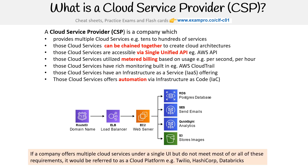If a company offers multiple cloud services under a single UI but does not meet most or all of these requirements, it would just be referred to as a cloud platform. So when you hear about Twilio, HashiCorp, or Databricks, those are cloud platforms — whereas AWS, Azure, and GCP are cloud service providers.